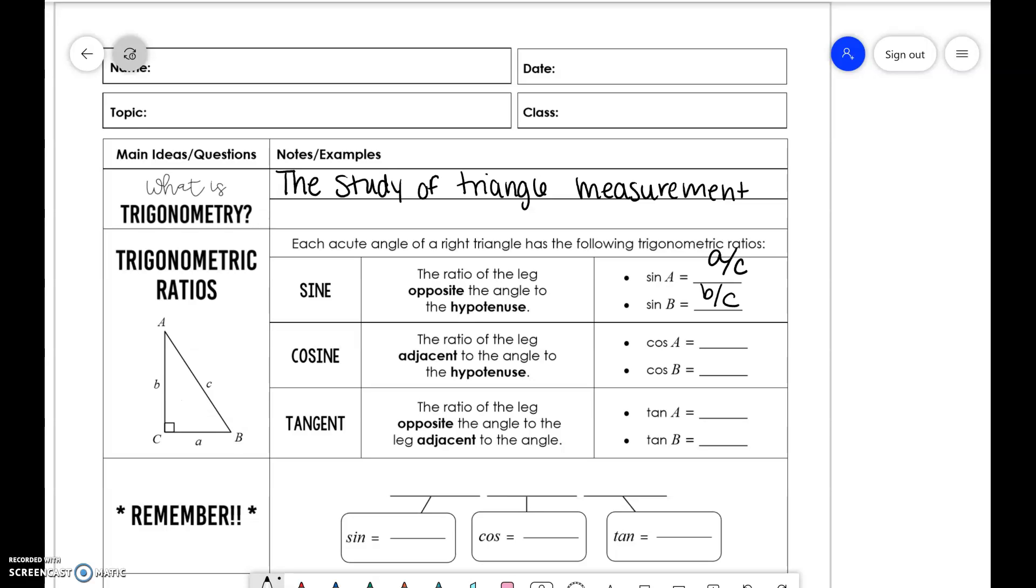That's going to be super important. If we did cosine, cosine is going to be the leg adjacent to the angle and the hypotenuse. So we're going to do cosine of A. The opposite side would be side A, but the adjacent side is going to be B. So we would be B over C. And if we did cosine of B, the adjacent side is A, so it would be A over C.